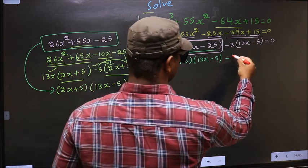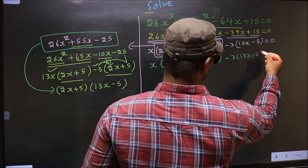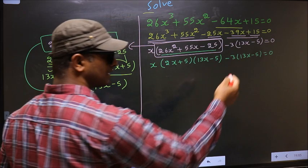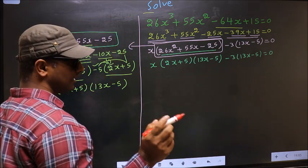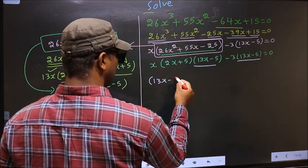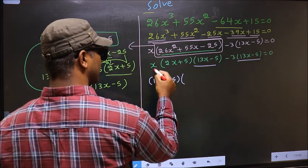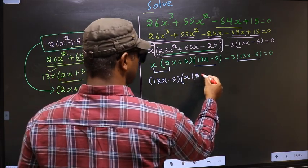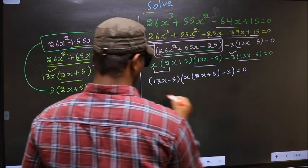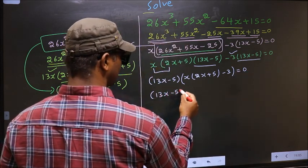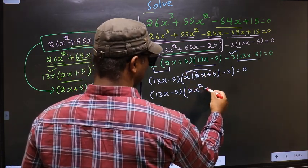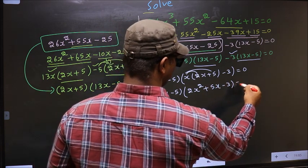Over here, no change. Equal to 0. So this equation will change to x times 2x plus 5, times 13x minus 5, over here no change, equal to 0. Now from this entire equation, what can be taken out common is 13x minus 5. So 13x minus 5 outside — we are left with x times 2x plus 5, and here minus 3, equal to 0. Now, 13x minus 5 — here you open up the brackets and get 2x squared plus 5x minus 3 equal to 0.